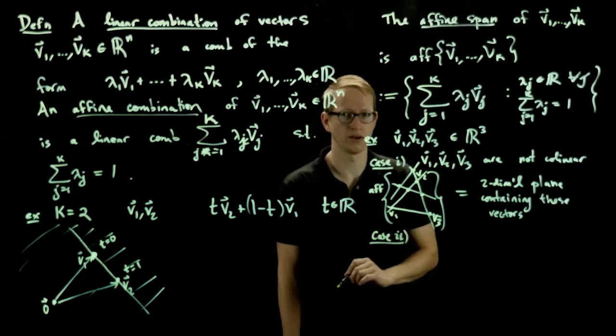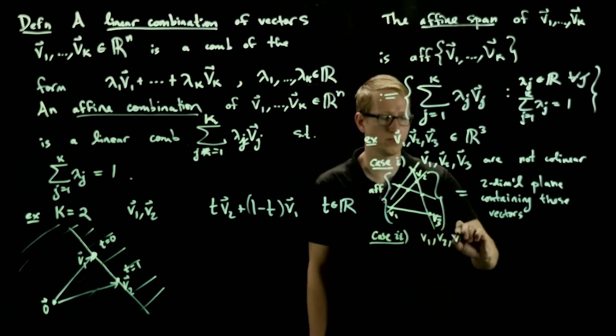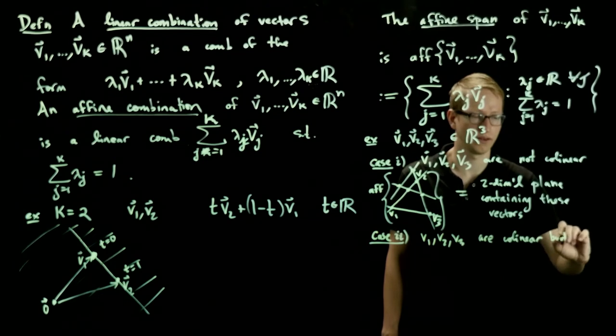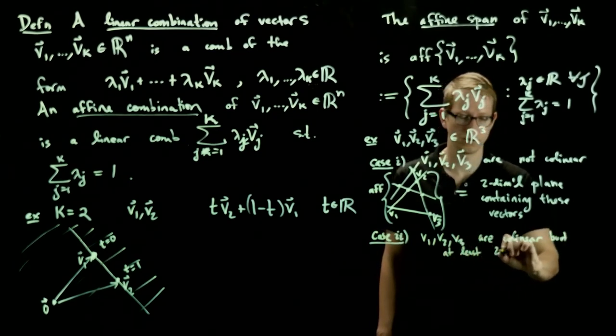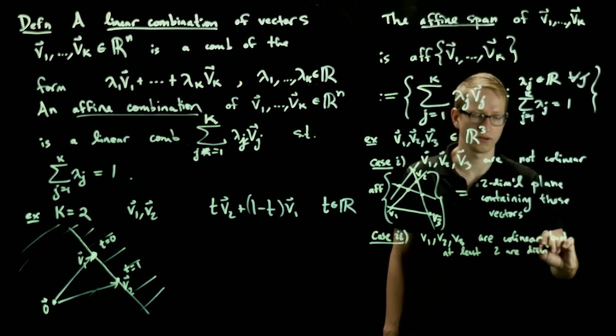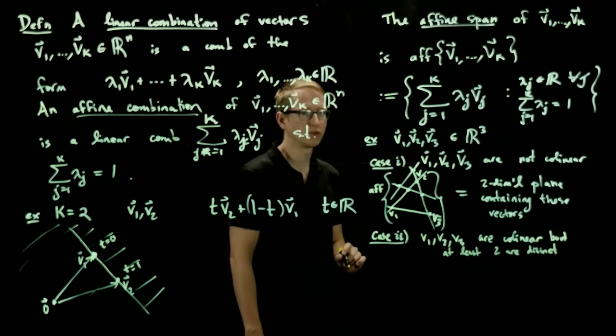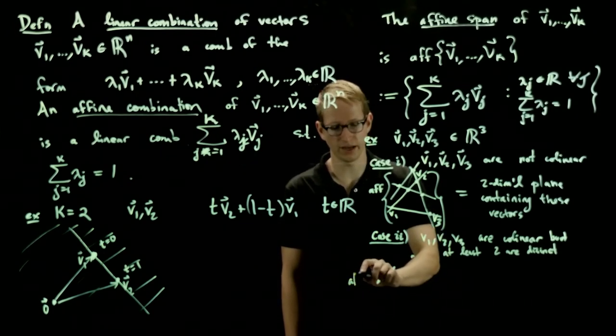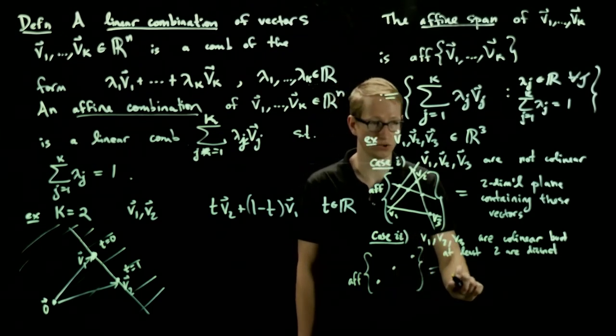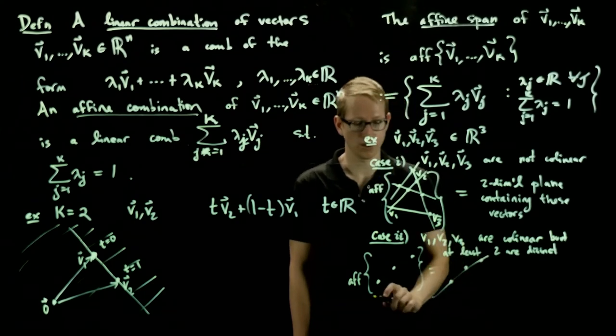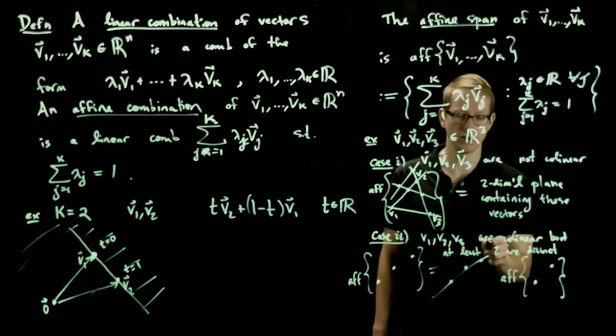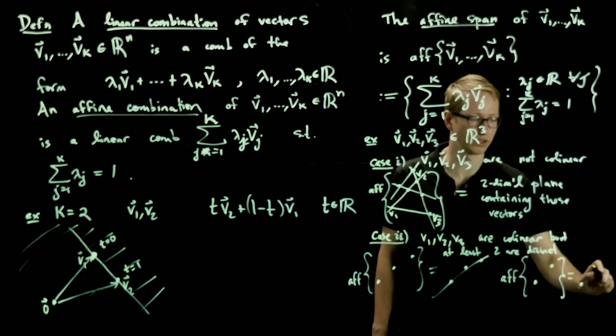In case two, let's imagine that v1, v2, v3 are collinear, but at least two are distinct. So in this case, I'm assuming that at least two, so either the possibilities are something like they're all different, but they lie on the same line, in which case the affine span of these three points is equal to the straight line through those three points. Or, the other case is, if two of them happen to coincide, then we just have two points, but I'm assuming that they're collinear and at least two are distinct, so we also get the straight line through those two points.